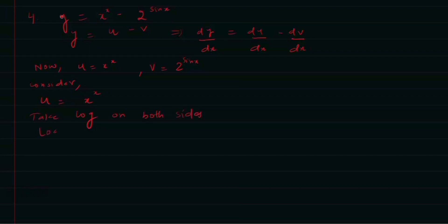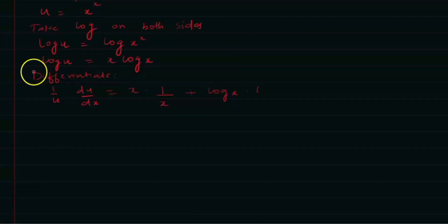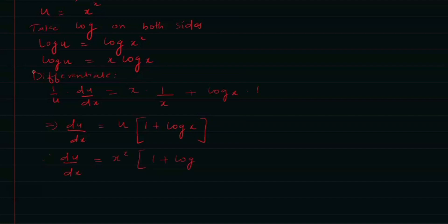log u = log(x^x) = x·log x. Differentiating: 1/u · du/dx = x·(1/x) + log x·1 = 1 + log x using the product rule. Therefore du/dx = u·(1 + log x) = x^x·(1 + log x).